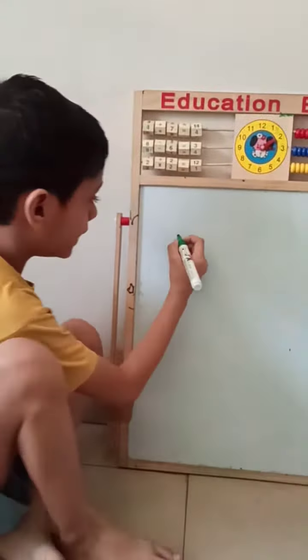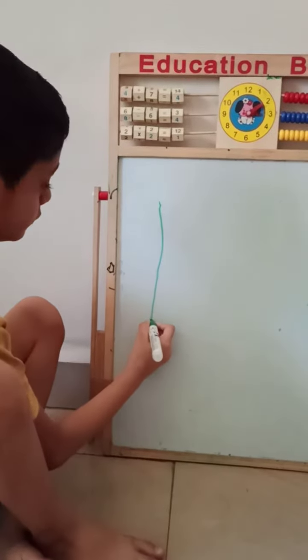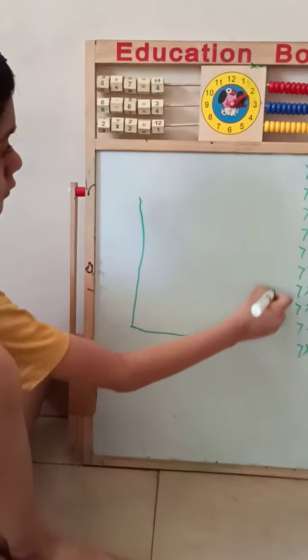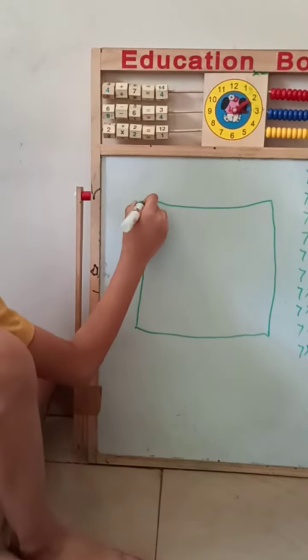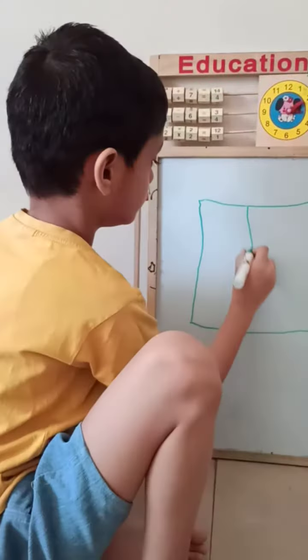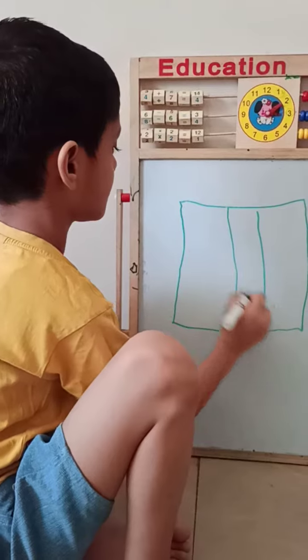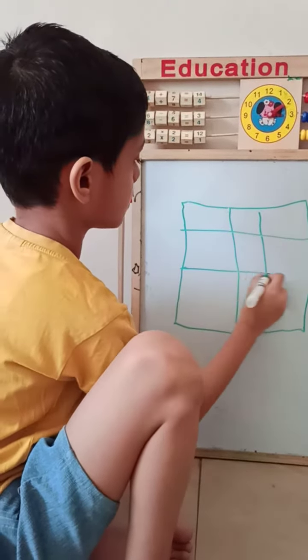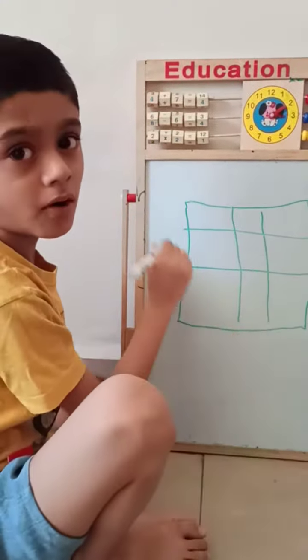See, first I draw one square. Then draw nine blocks. Here are nine blocks.